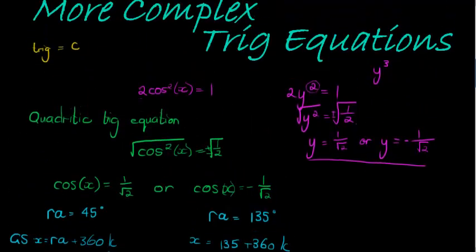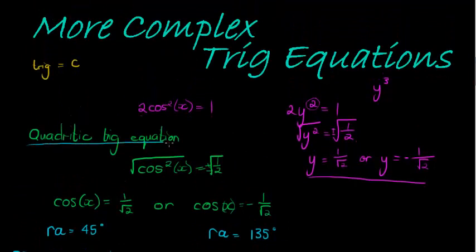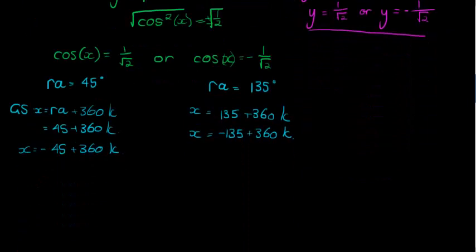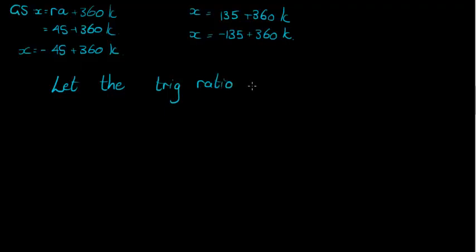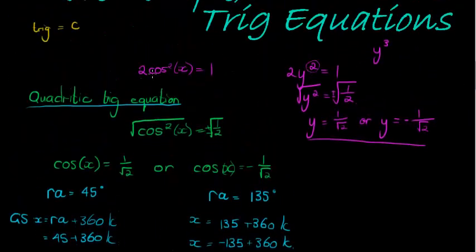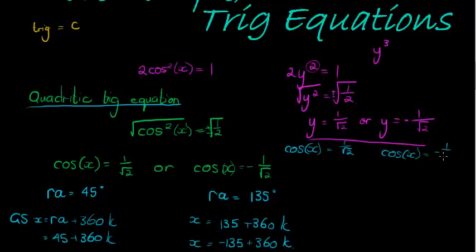When dealing with quadratic trig equations, here's a tip: let the trig ratio equal y — just replace it with something. That's exactly what I did here. Instead of having cos²x, I put y in its place, solve for y, and then substitute back to say cos(x) = 1/√2 or cos(x) = -1/√2. That gets you to the same step.